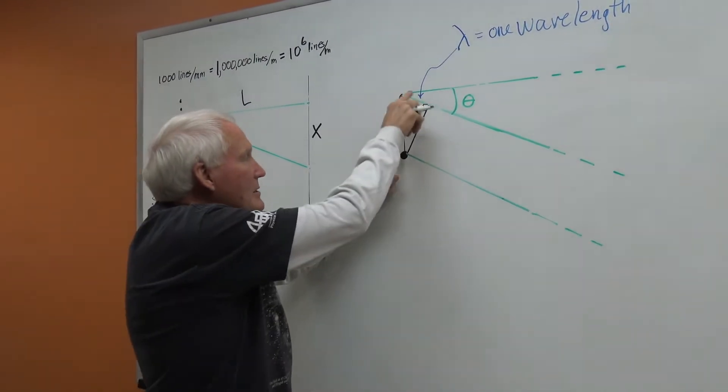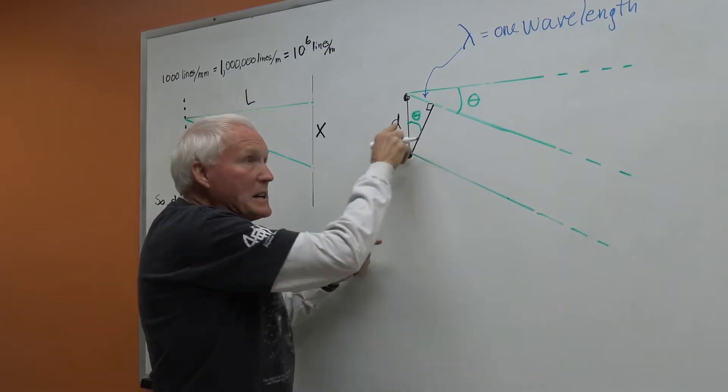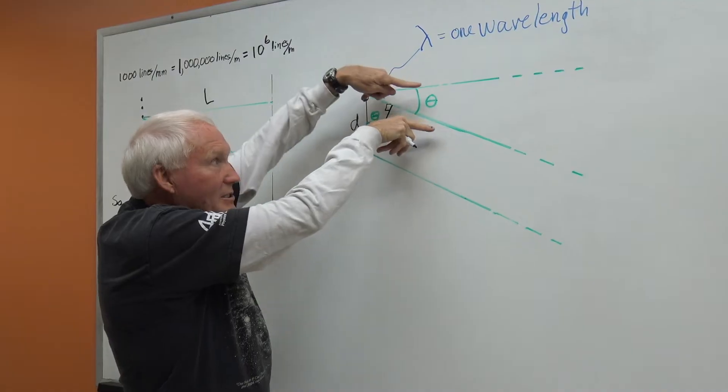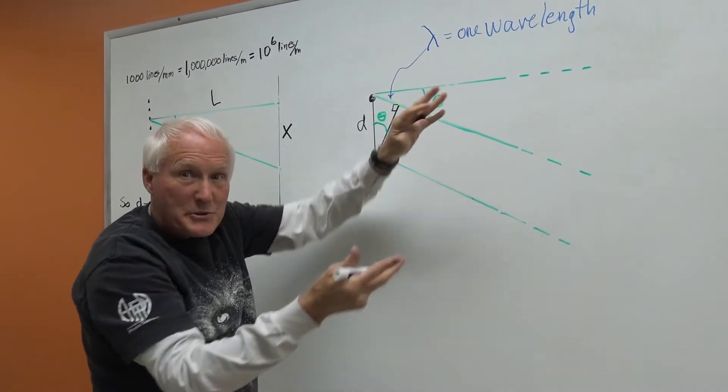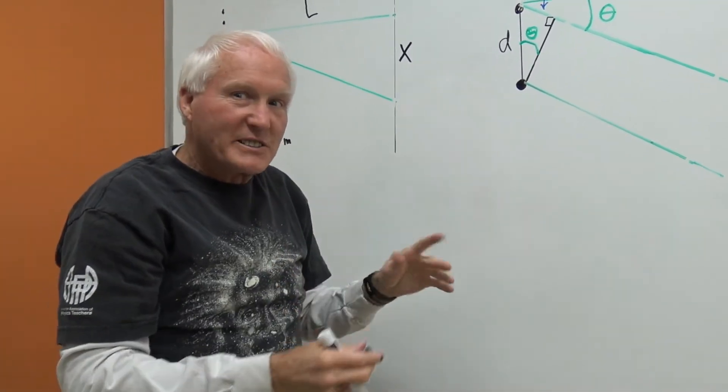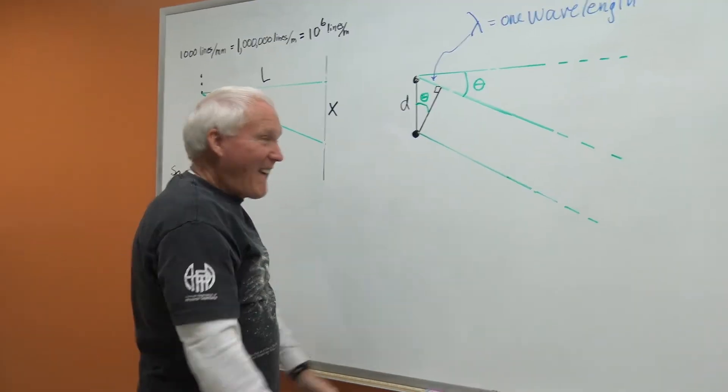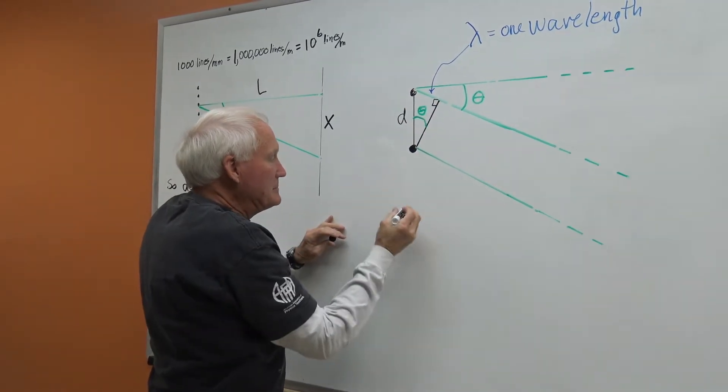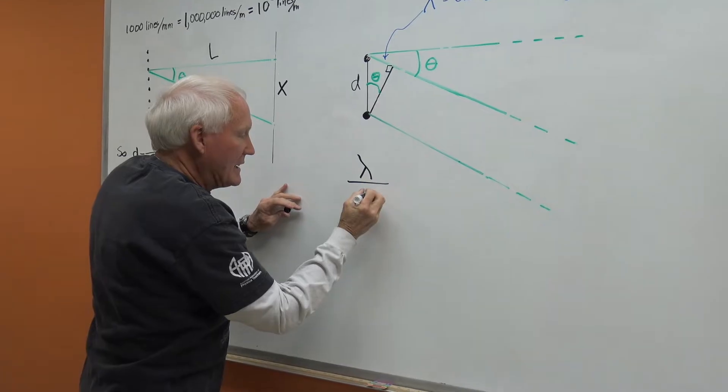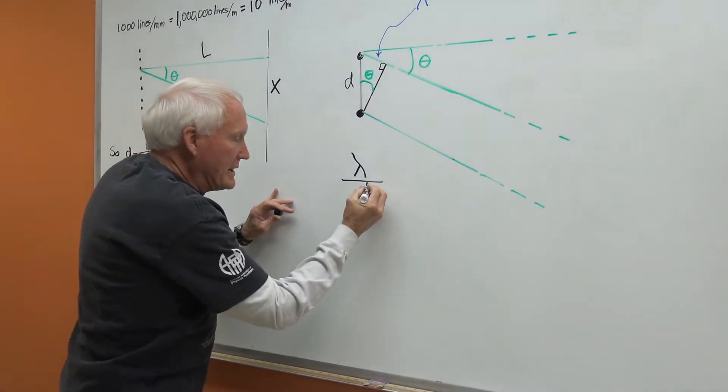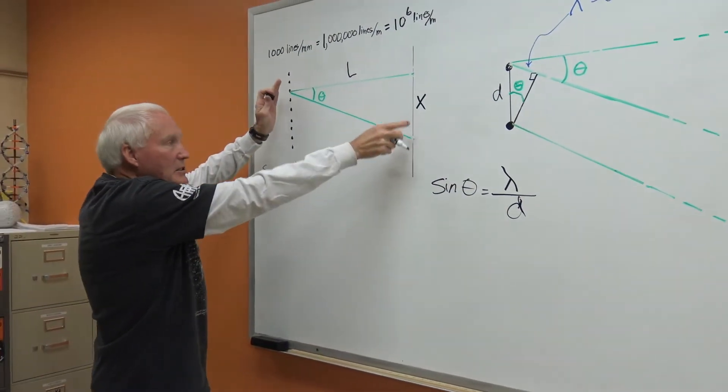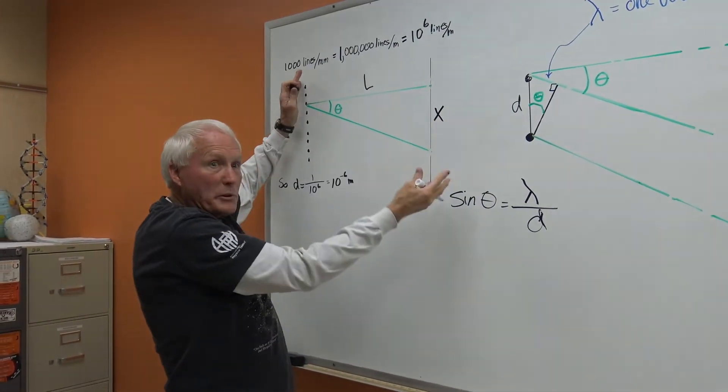So here we have a little triangle with the same angle because the two sides of this angle are perpendicular to the two sides of that. And in geometry somewhere, there's a theorem or a corollary that says if two angles have their sides mutually perpendicular, they are congruent. This side, which is lambda, if we divide that by d, mathematically, that's called the sine of the angle.